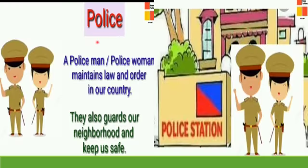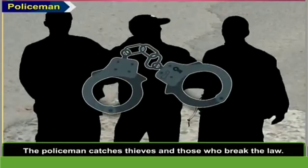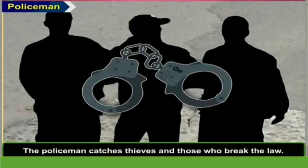Now who is the next helper? Correct! It is a Policeman. A policeman or a policewoman maintains law and order in our country. They also guard our neighborhood and keep us safe. Where does the police work? Correct! In a police station. The policeman also catches thieves and those who break the law. So in one way they are our helpers — they protect us.